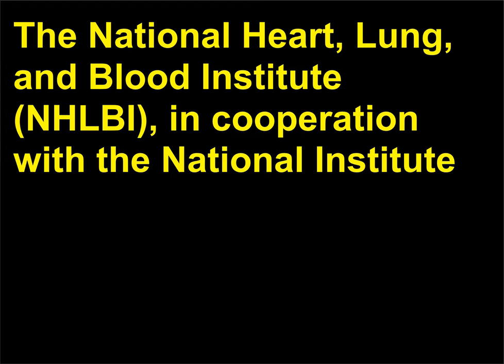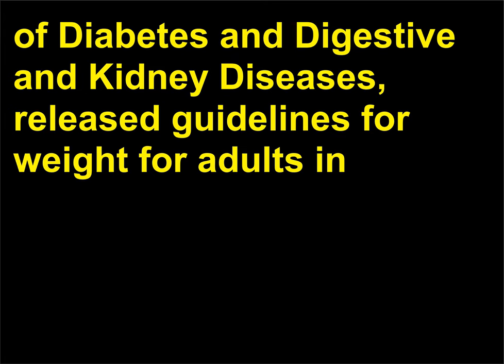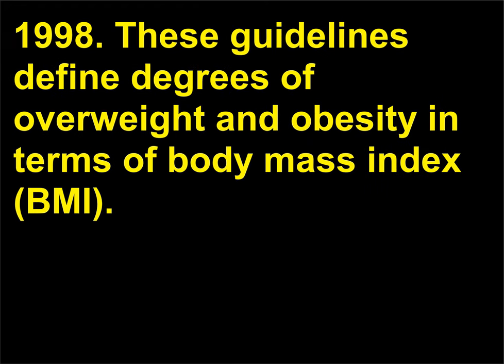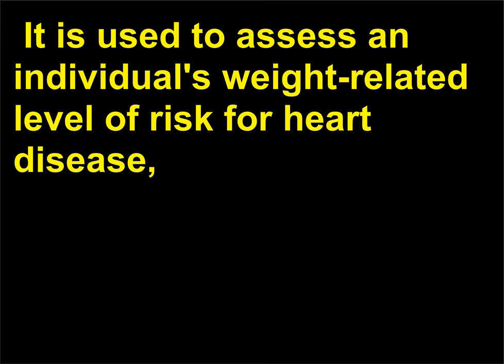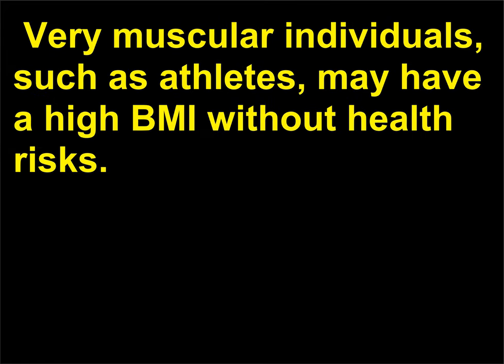The National Heart, Lung, and Blood Institute (NHLBI), in cooperation with the National Institute of Diabetes and Digestive and Kidney Diseases, released guidelines for weight for adults in 1998. These guidelines define degrees of overweight and obesity in terms of body mass index (BMI). Body mass index is based on weight and height and is strongly correlated with total body fat content. It is used to assess an individual's weight-related level of risk for heart disease, diabetes, and high blood pressure. Very muscular individuals, such as athletes, may have a high BMI without health risks.